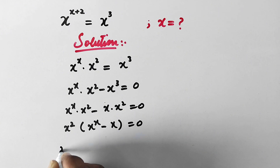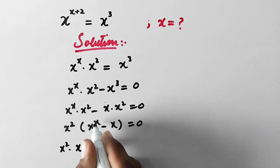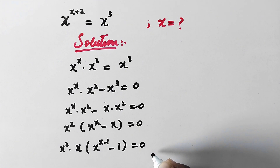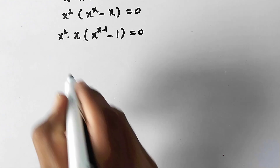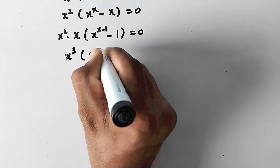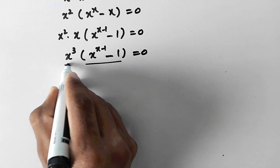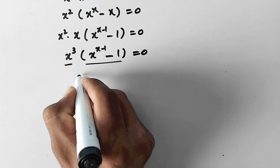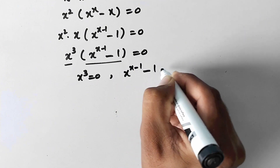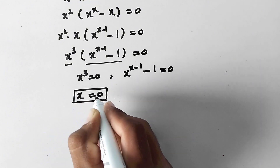Or in the next step, from x squared times x to the power x minus x, we will again take x as a common factor. So here it will be x squared times x to the power x minus 1 minus 1 equals 0. This gives us x cubed times x to the power x minus 1 minus 1 equals 0. Now we can see there are two factors equal to 0, giving two solutions: x cubed equals 0, so x is equal to 0, which is one root of x.